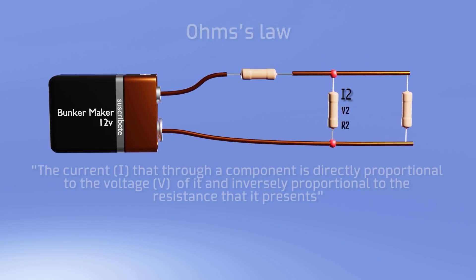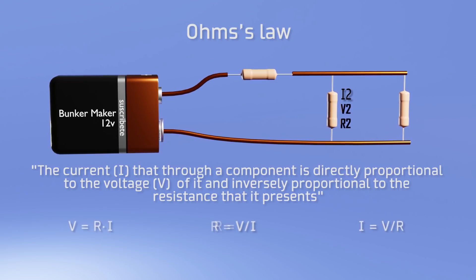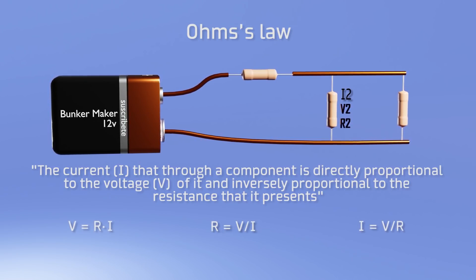And finally, the third law is Ohm's law, which tells us that the voltage in a component is equal to the current that passes through it, multiplied by its resistance. Which by the way, allows us to calculate any of the three variables as long as we have the other two.